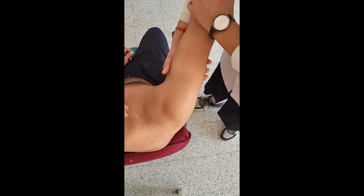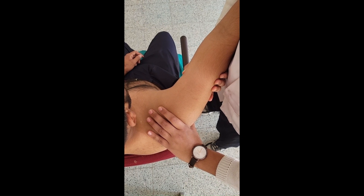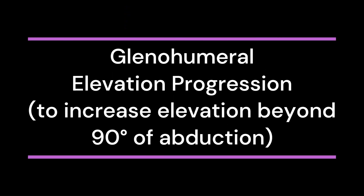Glenohumeral elevation progression. Indication: to increase elevation beyond 90 degrees of abduction. Patient position: supine or sitting with the arm abducted and externally rotated to the end of its available range. Hand placement is the same as for the caudal glide progression. Adjust your body position so that the hand applying the mobilizing force is aligned with the treatment plane in the glenoid fossa. With the hand grasping the elbow, apply a grade 1 distraction force. With the hand on the proximal humerus, glide the humerus in a progressively anterior direction against the inferior folds of the capsule.